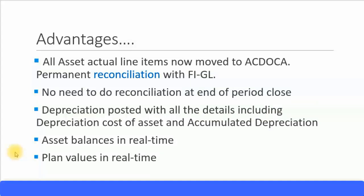Because everything is now being directly recorded in the universal journal entry table, which is the ACDOCA table, there is permanent reconciliation between asset accounting and the general ledger. So between the sub-ledger and the general ledger, there is always a permanent reconciliation.